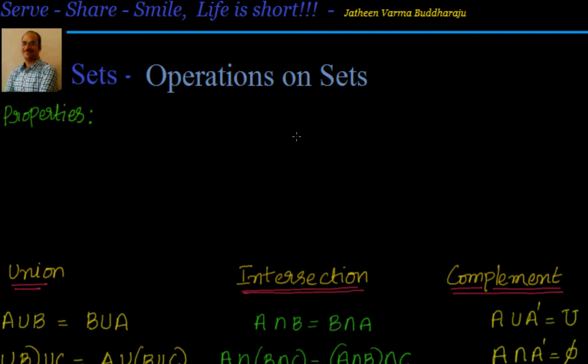Hello, welcome back. In the last session we have seen operations and sets where we briefly discussed about union, intersection, and minus. In this session we will look into complement. After that we will look into some properties which are mostly self-explanatory, but wherever needed we will draw Venn diagrams and try to see how we can prove and understand them easily.